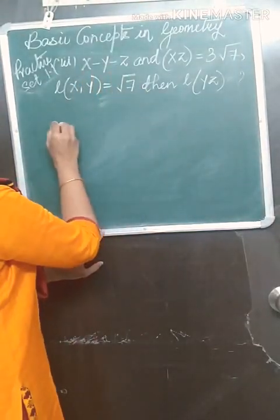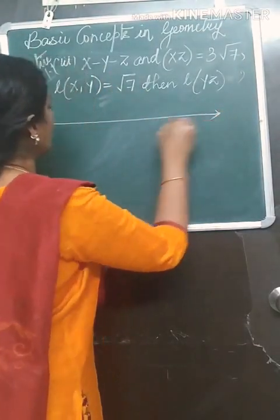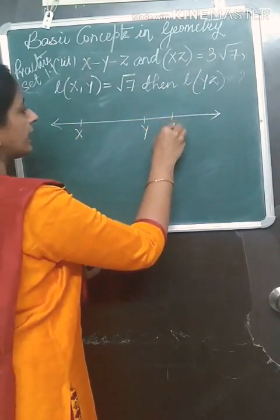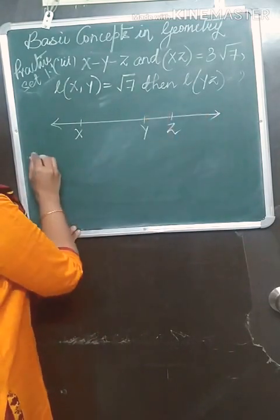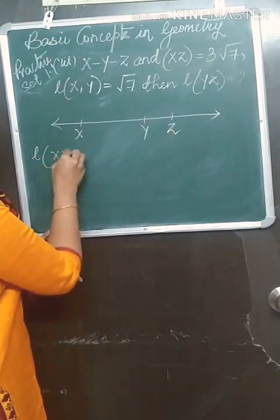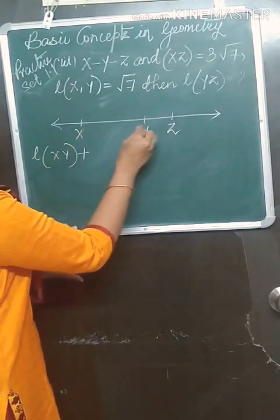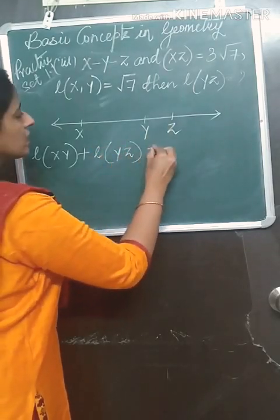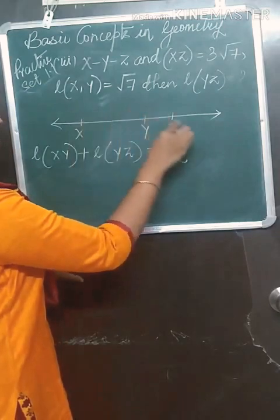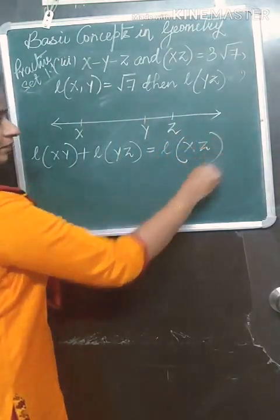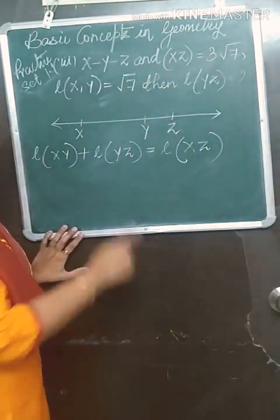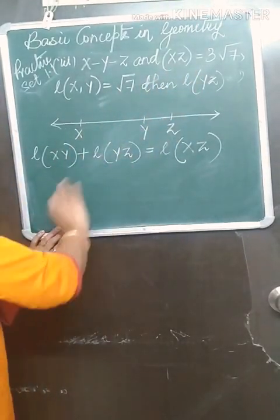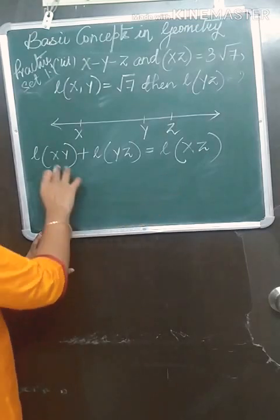Next: X-Y-Z. Draw the figure for X-Y-Z. Write down the condition: length of XY plus length of YZ is equal to length of XZ. Now look at the given details and substitute — don't be scared of the root, it's very simple to solve.